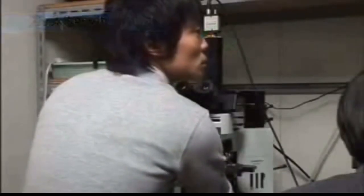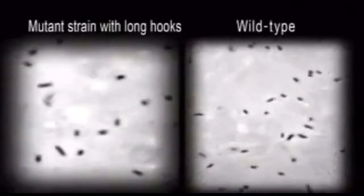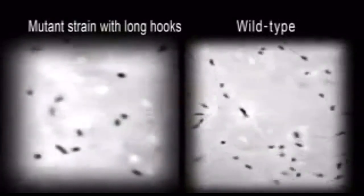While there is a large variation in the length of the flagellar filament, the length of the hook is almost constant at 55 nanometers. Mutants with hooks longer or shorter than 55 nanometers cannot swim properly.